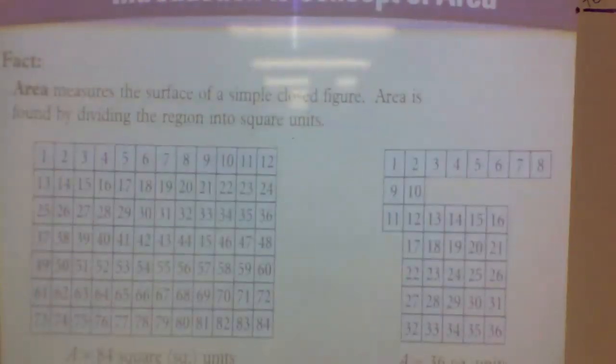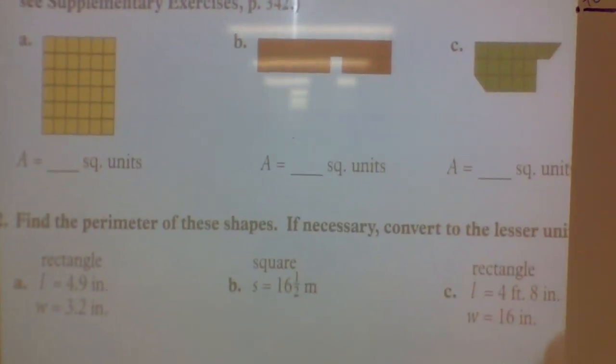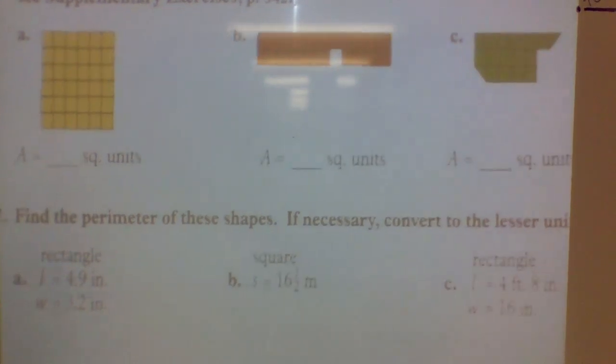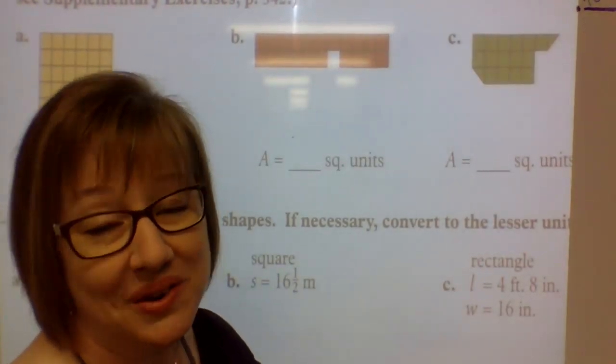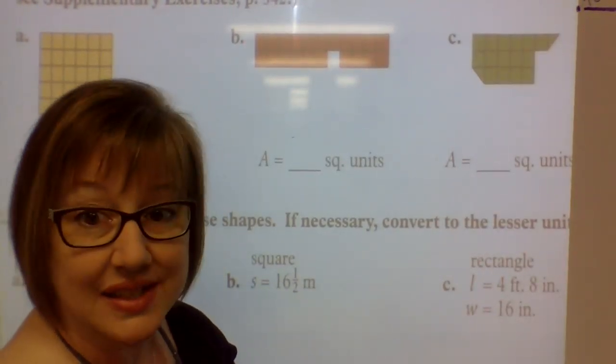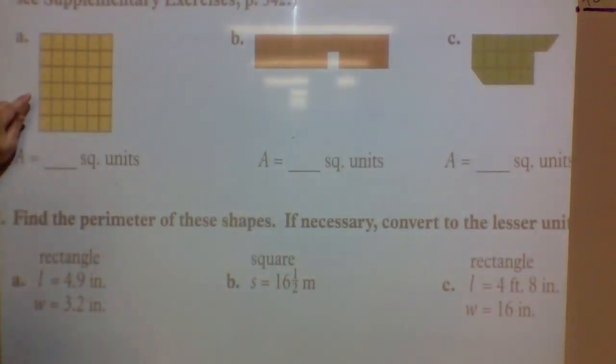Let's look at the paper that we're supposed to do. It says to find the area by counting each square unit. Again, we're just going to continue counting today. And then tomorrow we start the easy stuff when you multiply. So are we on the board? Yes. All right. Here we go.